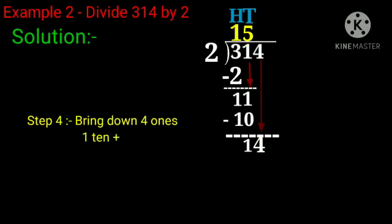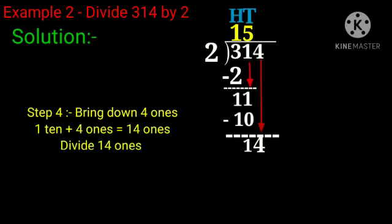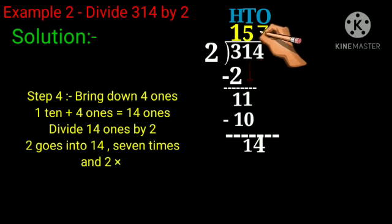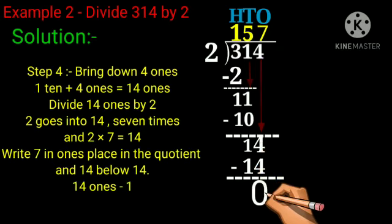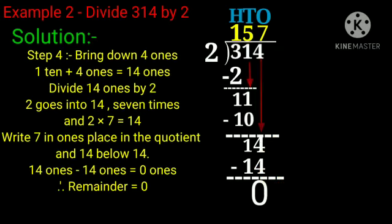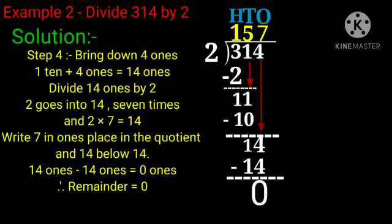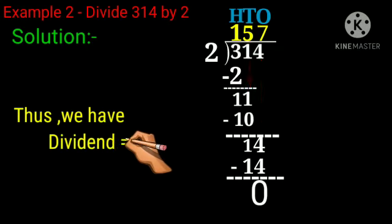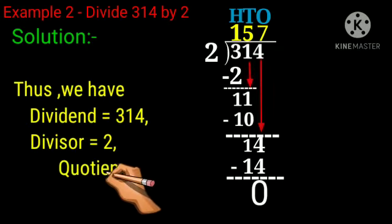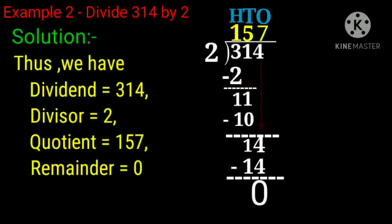Now bring down 4 ones. 1 and 4 will make 14. Divide 14 ones by 2. 2 goes into 14 seven times and 2 multiplied by 7 equals 14. Write 7 in ones place in the quotient and 14 below 14. 14 minus 14 equals 0. Therefore the remainder is 0. So we have dividend equals 314, divisor equals 2, quotient equals 157, and remainder equals 0.